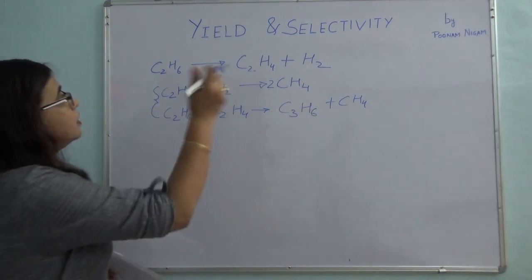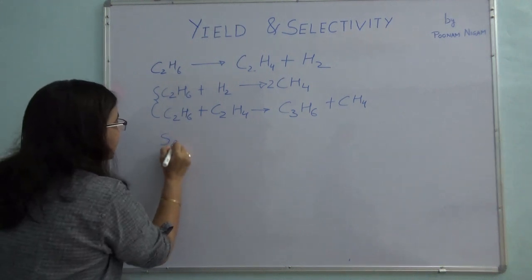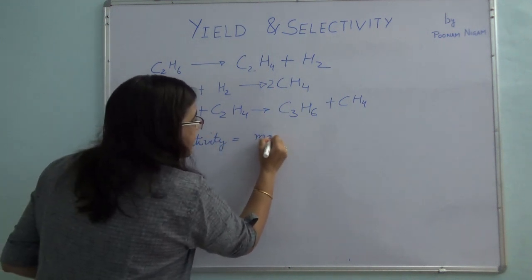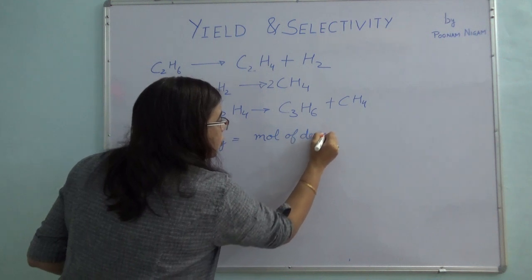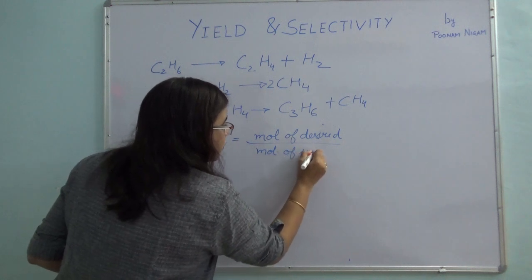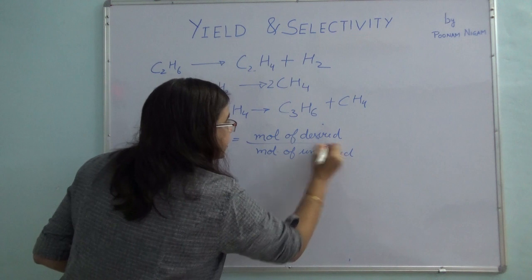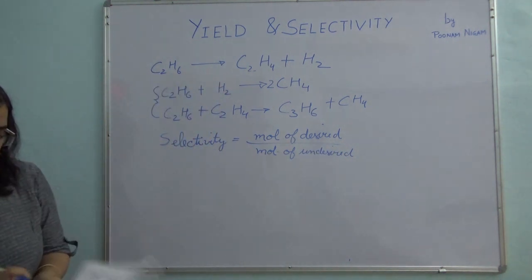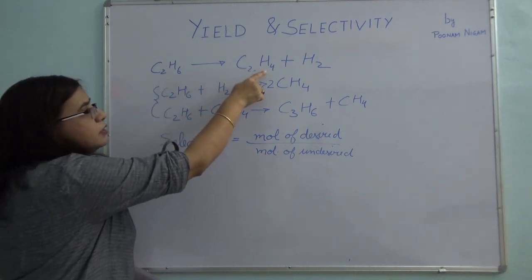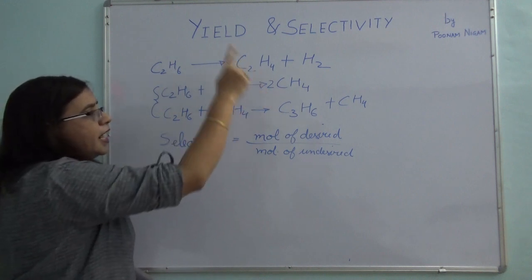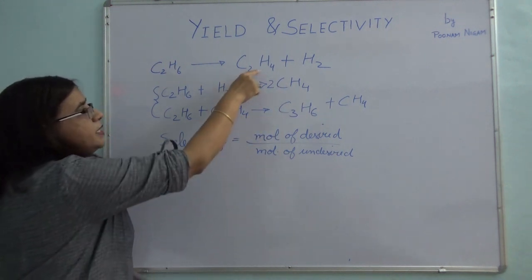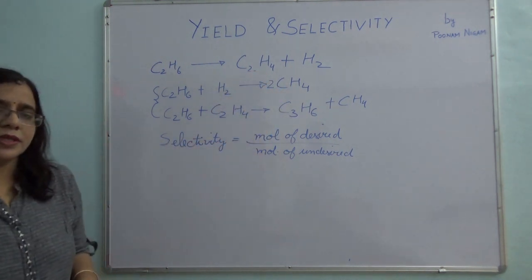Selectivity is defined as the moles of desired product upon moles of undesired products. So moles of desired upon undesired is your selectivity. For example, if 5 moles of desired product is formed and 2 moles of methane are formed, then selectivity will be 5 divided by 2, that is 2.5. This concept is easy to understand.